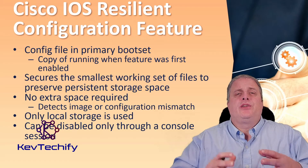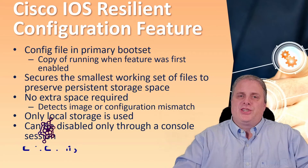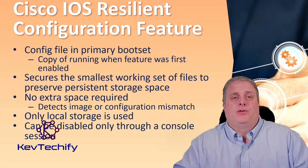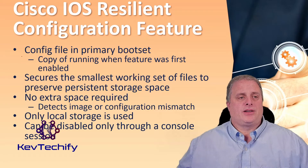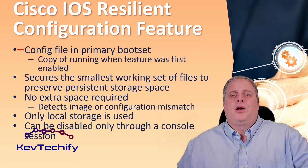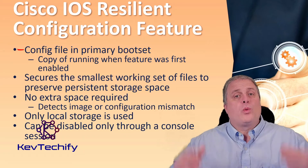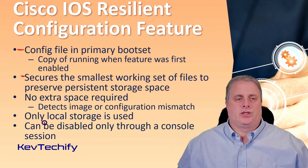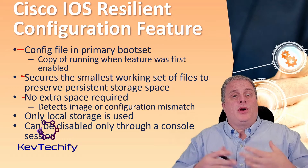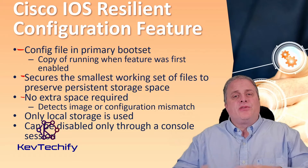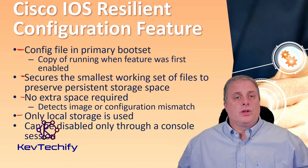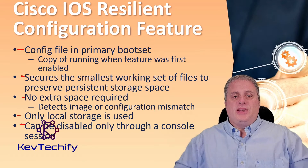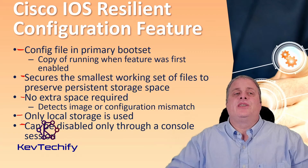The Cisco IOS Resilient Configuration feature allows for faster recovery if someone maliciously or unintentionally reformats your flash memory or erases the startup configuration file in non-volatile RAM memory, NVRAM. The configuration file in the primary boot set is a copy of the configuration that was in the router when that feature was first enabled. The feature secures the smallest working set of files to preserve persistent storage. No extra space is required to secure the primary Cisco IOS image file. The feature automatically detects image or configuration version mismatch. Only local storage is used to secure those files. The feature can be disabled only through the console connection, so you have to console into your device to disable it.